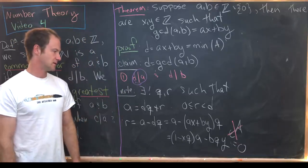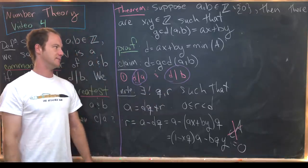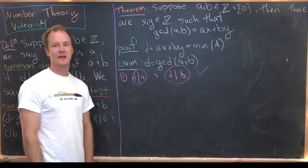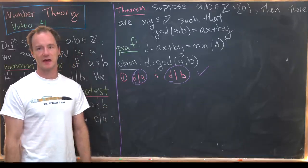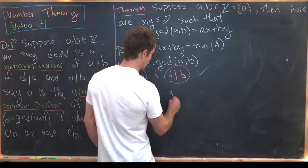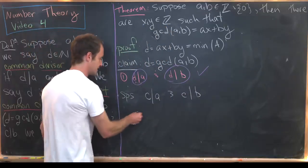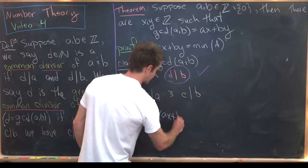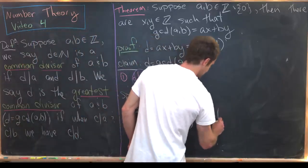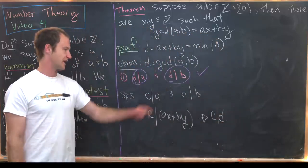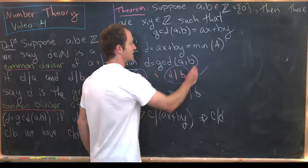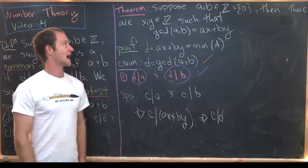Very similarly, just switching a with b, we see that d also divides b. So d is a common divisor. Now we need to show it is the greatest common divisor. Suppose c divides a and c divides b. Then c divides ax plus by by a result from a previous video. But ax plus by equals d, so c divides d. We started with any common divisor and showed it divides d, finishing the proof that d is the GCD of a and b.